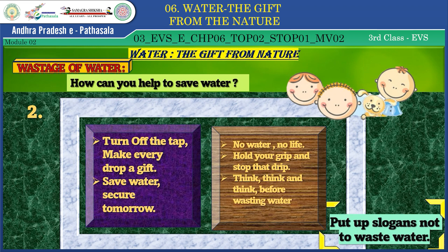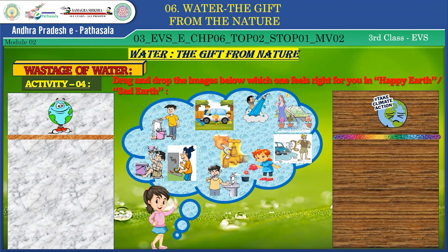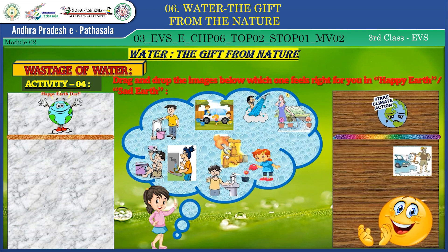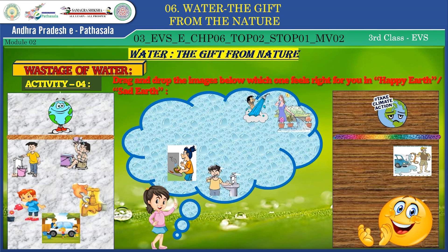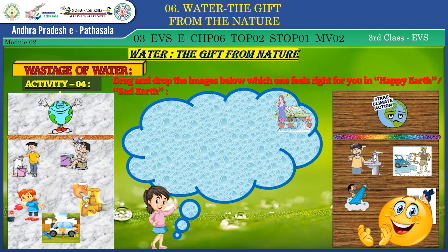Now an activity is waiting for you. Drag and drop the images into 'happy earth' or 'sad earth.' The man turning off the tap, bathing with a bucket, watering plants with a shower pot, repairing pipe leakages, and washing a car with a bucket and cloth come under happy earth. Brushing with running water, washing a car with a pipe, taking a shower bath, cleaning vegetables under the tap, and a lady watering plants with a pipe while talking on mobile without observing overflow come under sad earth. Do you want earth to be happy or sad? Follow good habits and keep earth happy.